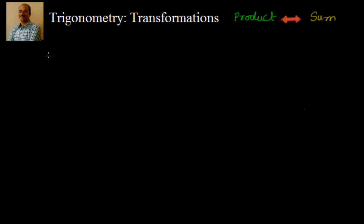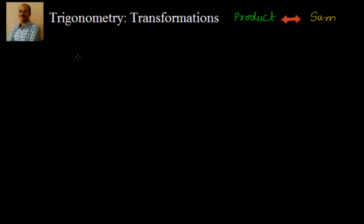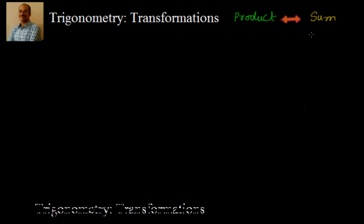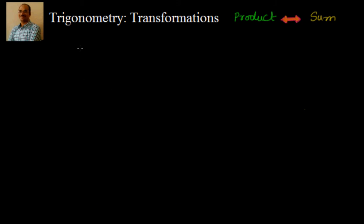Hi everyone, welcome. We have started trigonometry with compound angles and we have seen multiple and sub-multiple angles. In this session we will see the meaning of transformations from product to sum. In trigonometry, if we have two trigonometric ratios that we are trying to sum up, we can convert them into a product. Similarly, if we are multiplying two trigonometric ratios, we can convert them into a sum.